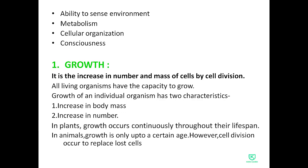The first characteristic is growth. Growth is the increase in number and mass of cells by cell division. Growth means increasing your number and mass with the help of cell division. When a cell divides, it increases the number of cells and the mass of cells. Growth of an individual organism has two features: first, increase in body mass, and second, increase in number.